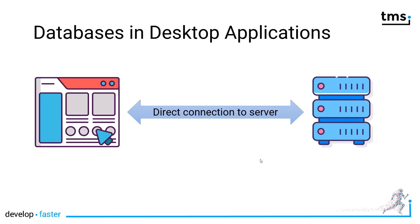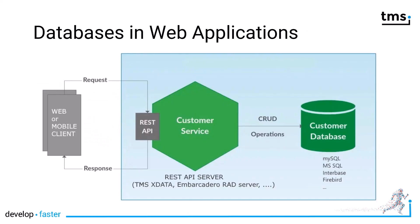A word on databases. In desktop applications, your application directly connects to the database server — this is possible because the application runs on your computer and on the same network. This is usually not the case in web applications. The web application runs inside of your browser, and thus the browser, which might be miles away, cannot access your database directly on your network. So you need to provide the data of your client application using some sort of API — usually a REST API.